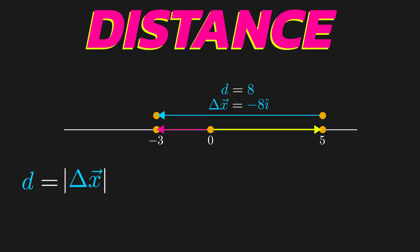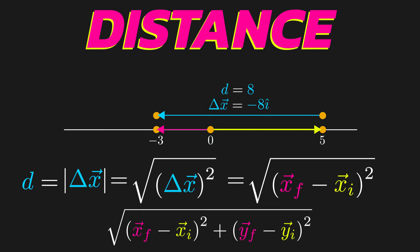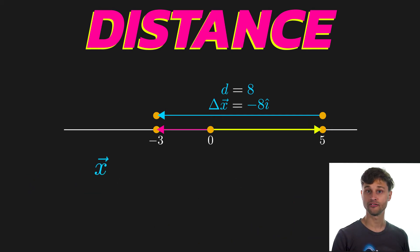That in fact gives us our distance. In general, the distance is equal to the magnitude of the displacement vector, which equals the square root of (x_final minus x_initial) squared. In one dimension the square and the square root cancel out, so distance is simply x_final minus x_initial. I write it with the square and square root because in two dimensions this expands into essentially the Pythagorean theorem, and in three dimensions we get the three-dimensional version of it.